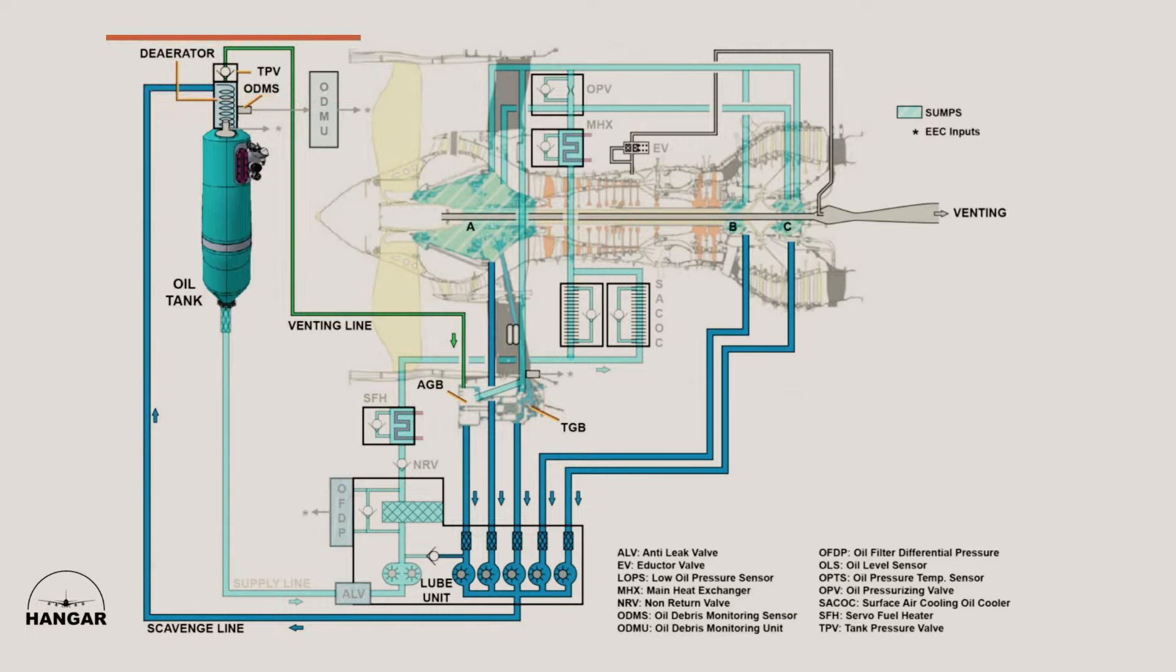It is fitted with a tank pressurizing valve, TTV, and an oil debris monitoring sensor, ODMS. The mist of air and oil is centrifugally separated. The oil is directed to the ODMS and then collected in the tank, whereas part of the air is used to pressurize the tank and the excess is vented to the AGB thanks to the tank pressurizing valve.